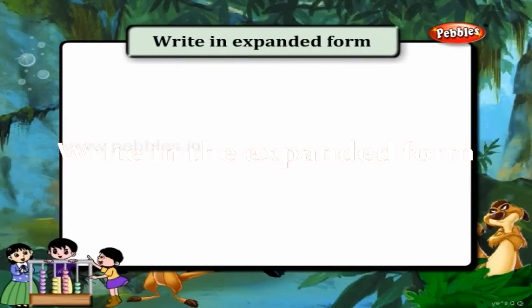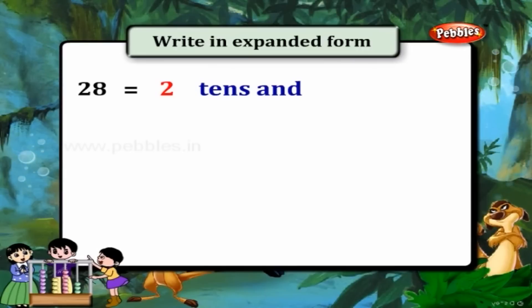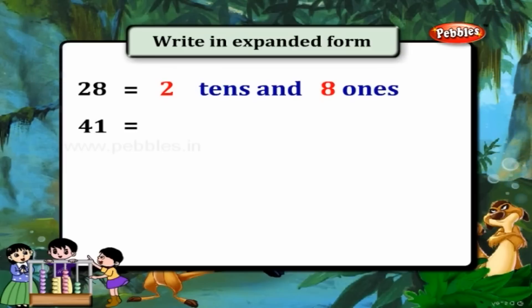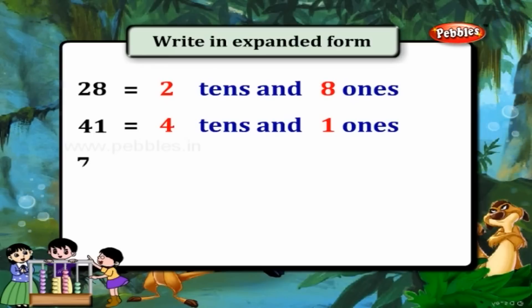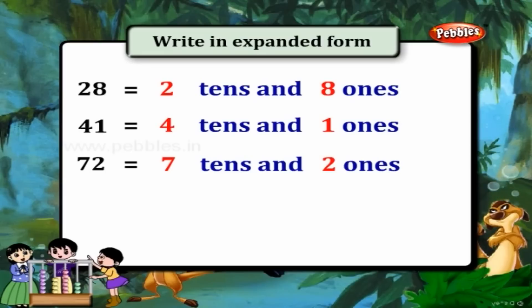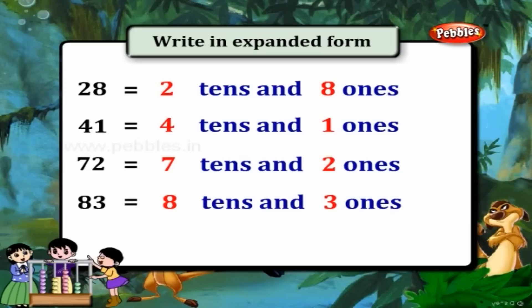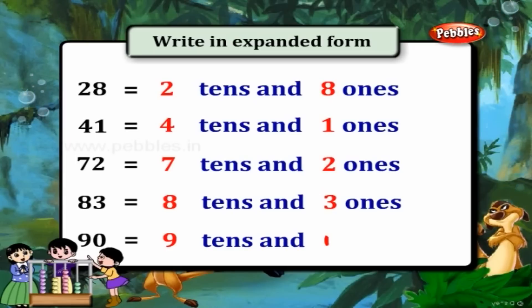Write in the expanded form. 28 is equal to 2 tens and 8 ones. 41 is equal to 4 tens and 1 one. 72 is 7 tens and 2 ones. 83 is 8 tens and 3 ones. 93 is 9 tens and 0 ones.